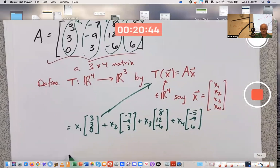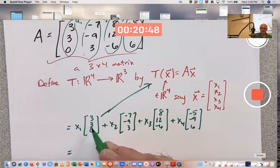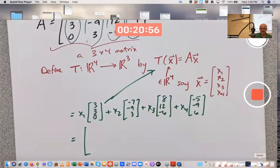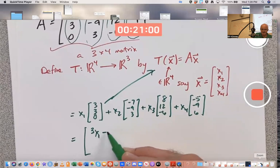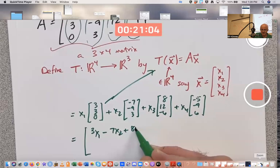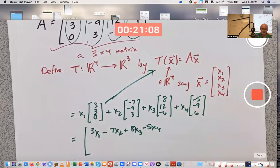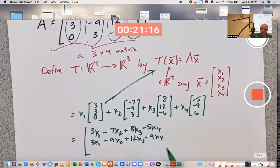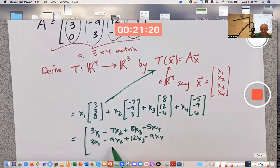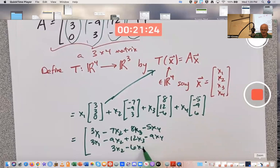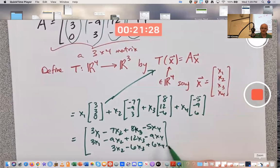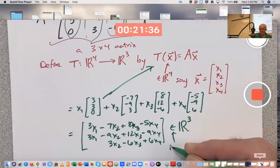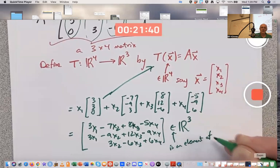That is the formula for this linear transformation. It's not the only formula. You can also multiply these weights, x1 through x4, times the components in these vectors. If you do that and combine all the vectors, you get a first component of 3x1 - 7x2 + 8x3 - 5x4, second component 3x1 - 9x2 + 12x3 - 9x4, and third component 3x2 - 6x3 + 6x4. This is a three-dimensional vector. It is an element of R3. This funny symbol means is an element of or is in for short.